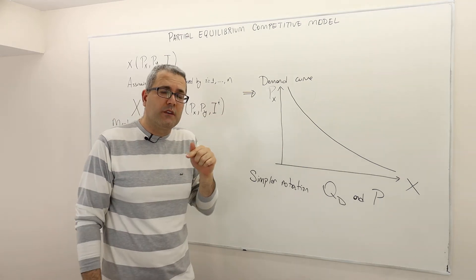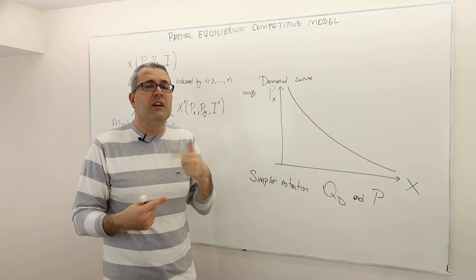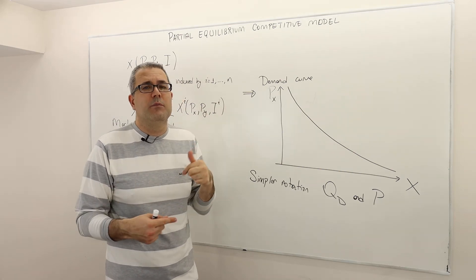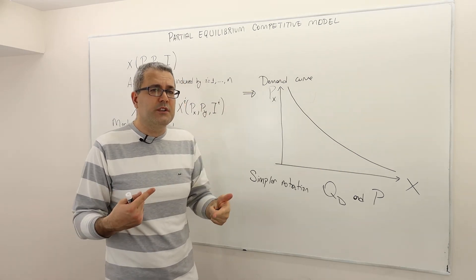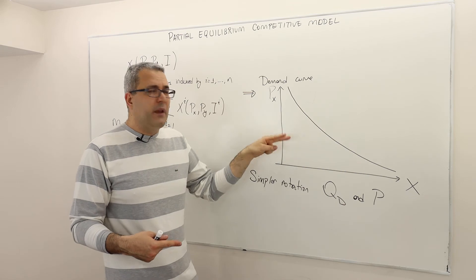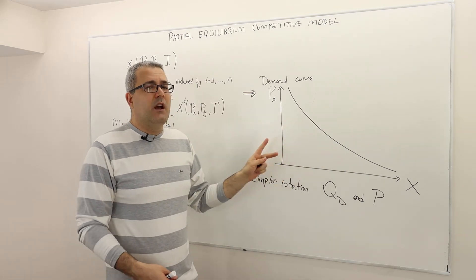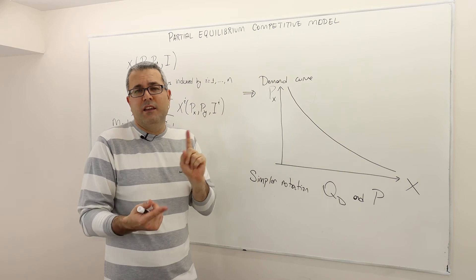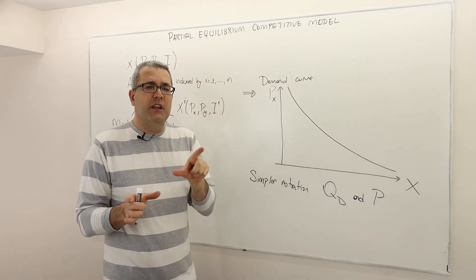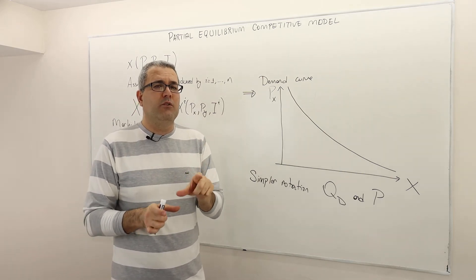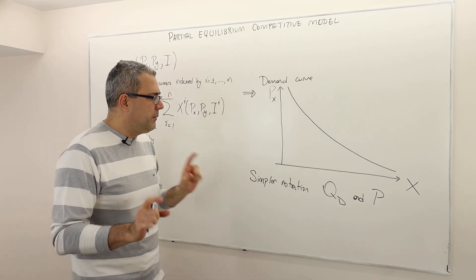This is important because later when we talk about things like elasticity, for example, or consumer surplus, producer surplus. So if you basically switch PX with X or the coordinates, then the description of these terms are not going to be the same. So be careful.